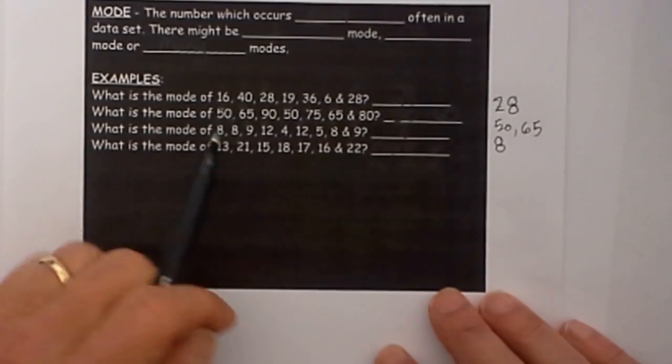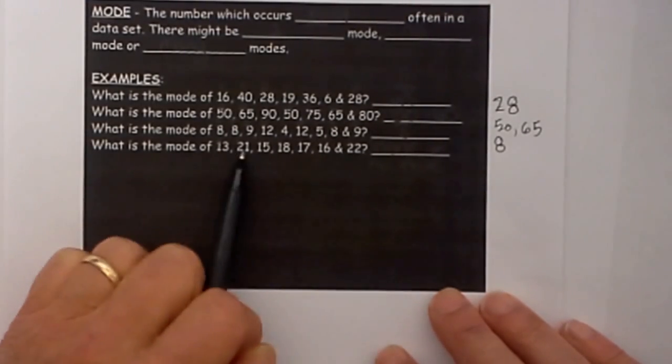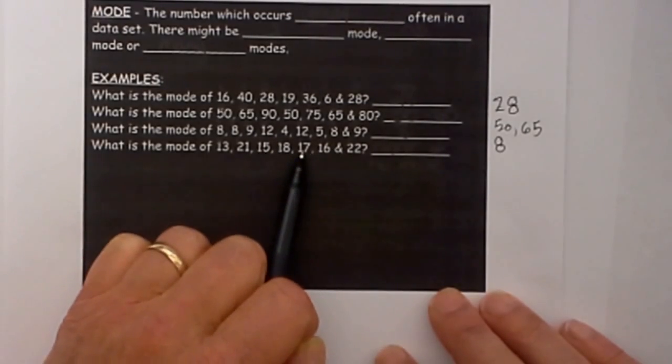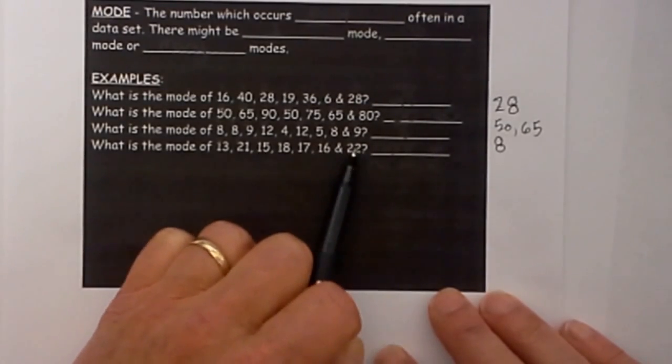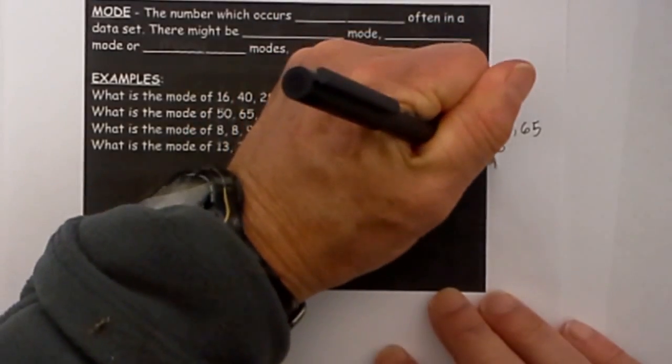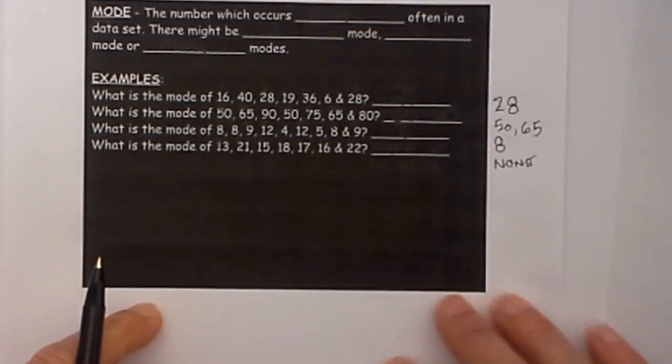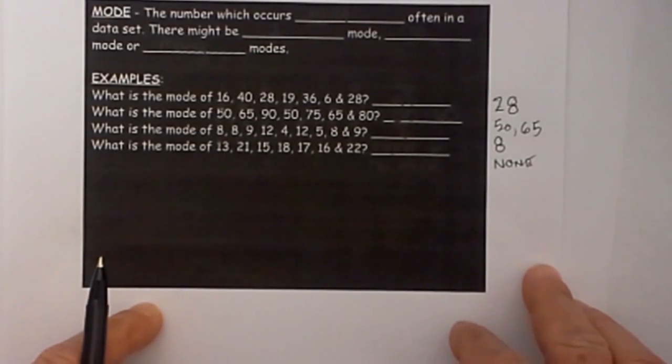And last but not least let's look at this next example. We have 13 occurs once, 21 once, 15 once, 18 once, 17 once, 16 once, 22. So there is none. There is not a number that occurs most often they occur the same.